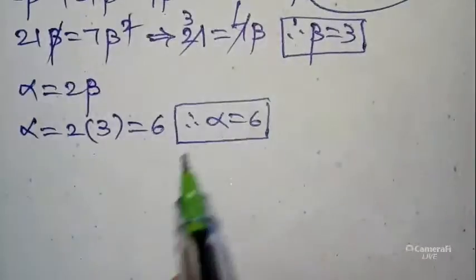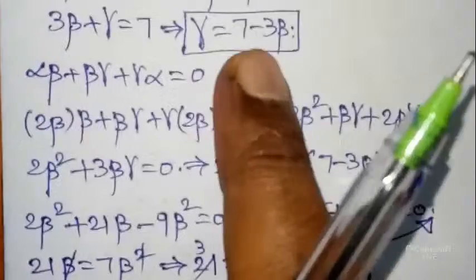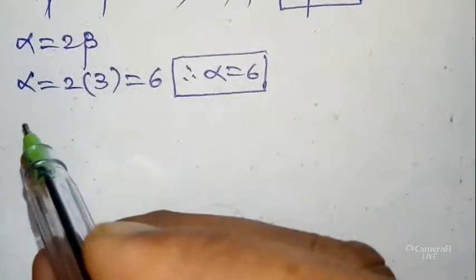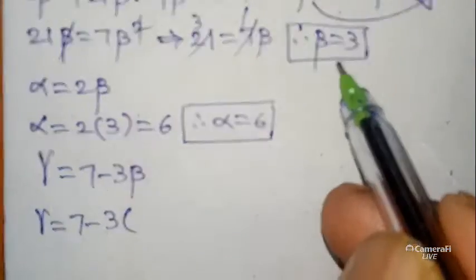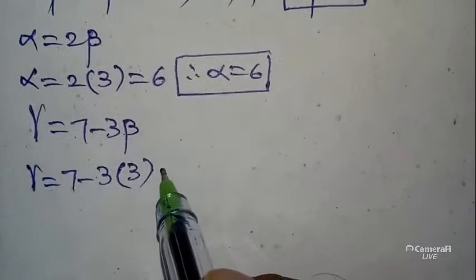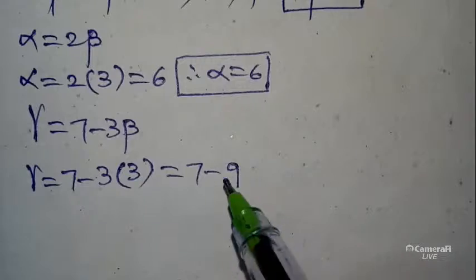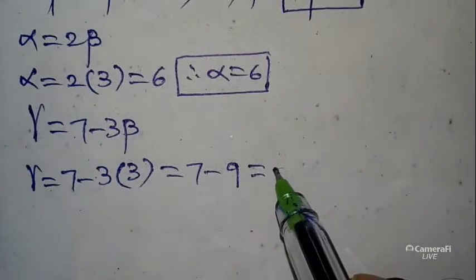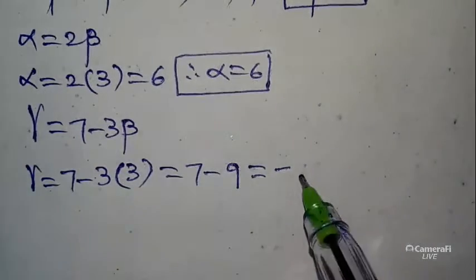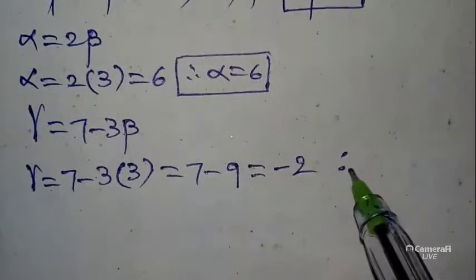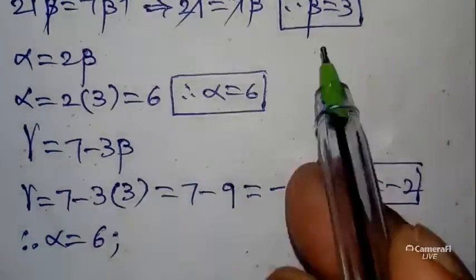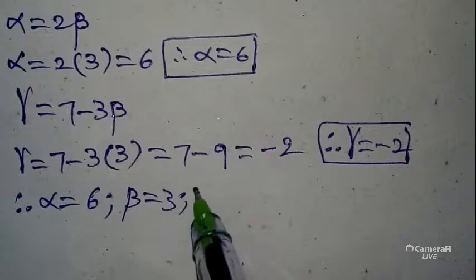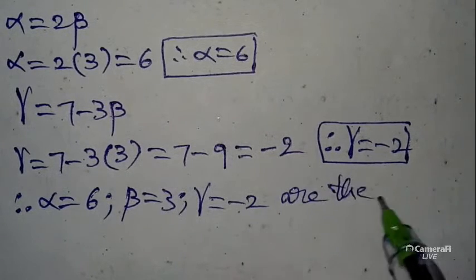Substituting beta = 3 into gamma = 7 - 3*beta: gamma = 7 - 3*3 = 7 - 9 = -2. Therefore the roots of the given equation are: alpha = 6, beta = 3, gamma = -2.